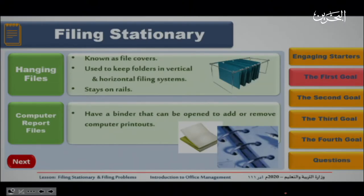The other type is the hanging file. From its name, the files are hanged, also known as file covers. It is used to keep folders in vertical and horizontal filing systems. It stays on a rail, which can be moved from side to side.